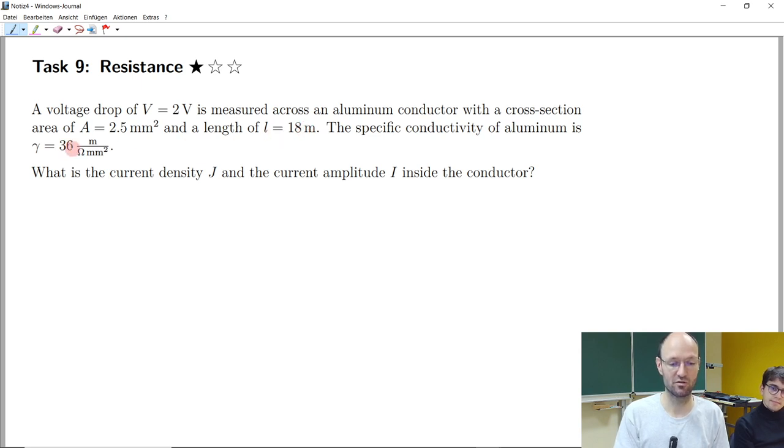And the specific conductivity is given here, not with 37 as we calculated in the exercise before but with 36. But as discussed yesterday, if you check different sources, if you check different tables, you will find different values. It depends on how pure the copper or the aluminum is, what specific type of aluminum and copper and so on this is.